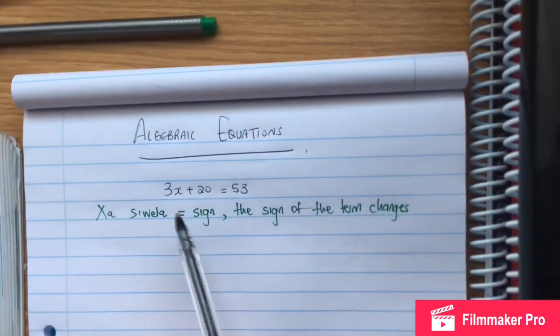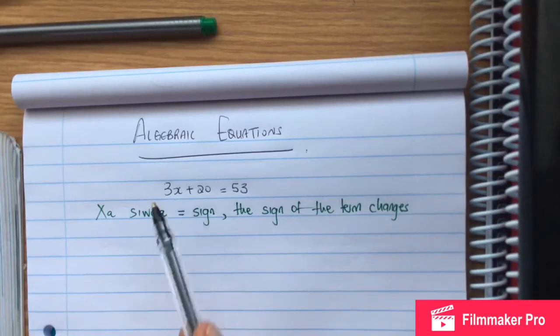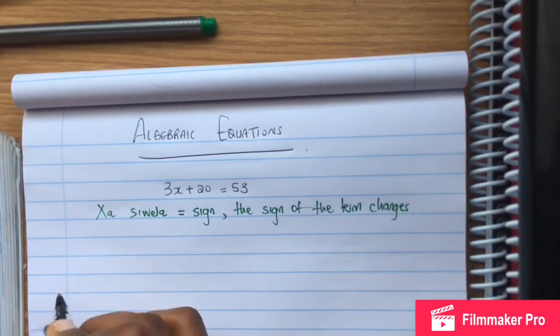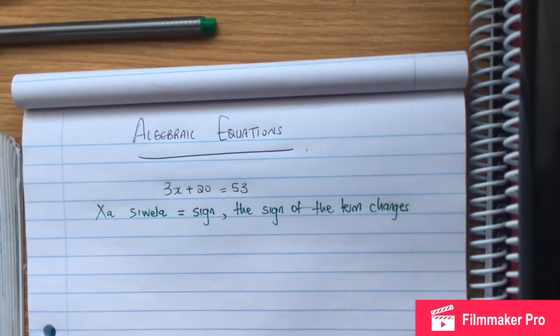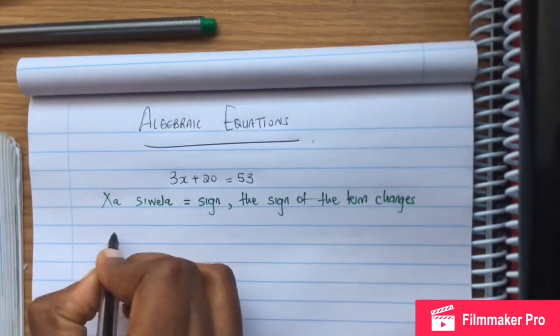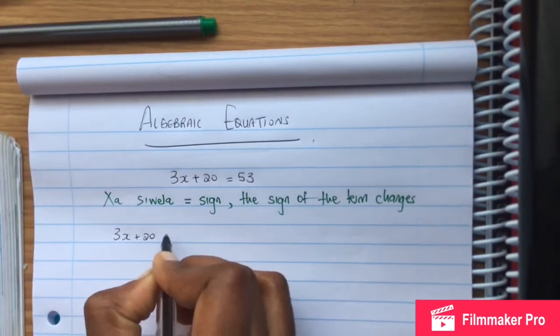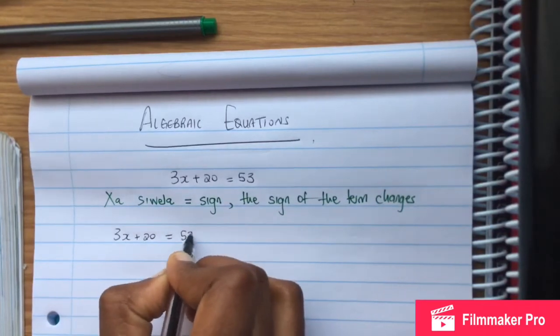Now let us solve for x. We need to find what x equals. We need to remember the rule that when a term crosses the equal sign, the sign changes. If the term is positive, when it crosses it becomes negative. If it's negative, it becomes positive.